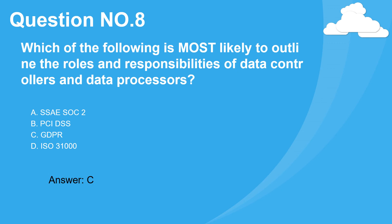Question number eight. Which of the following is most likely to outline the roles and responsibilities of data controllers and data processors? A. SSAE SOC 2. B. PCI DSS. C. GDPR. D. ISO 31000. Answer: C.